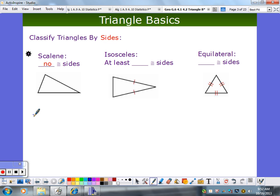Okay? An isosceles has at least how many congruent sides? Two. Equilateral. How many? Three. Three, right? All the sides are congruent.